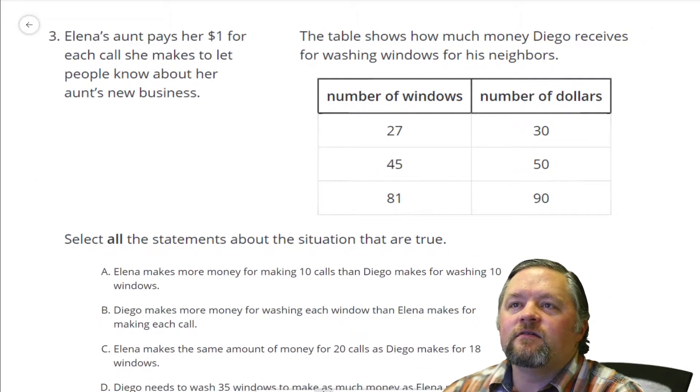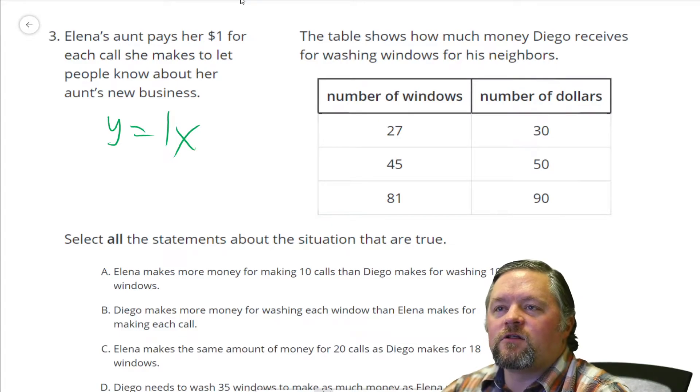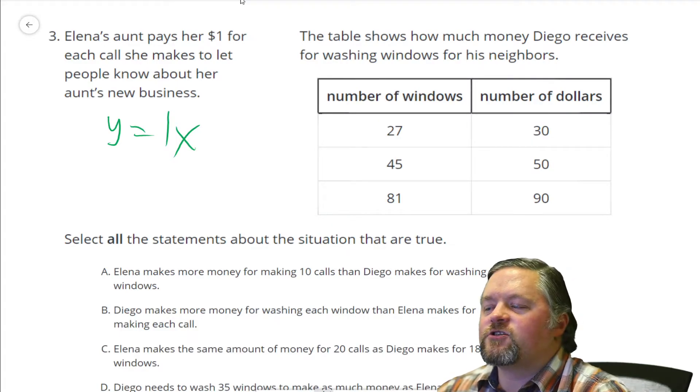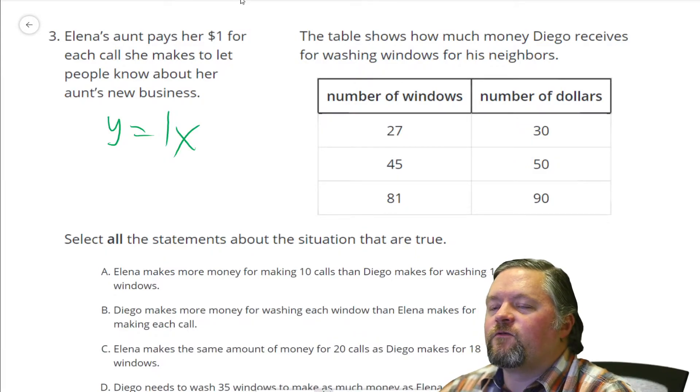If Elena pays her aunt $1, she gets paid $1 per call. That's going to be an equation of Y equals 1X. Let's look at this other one for Diego and see if we can find a unit rate.